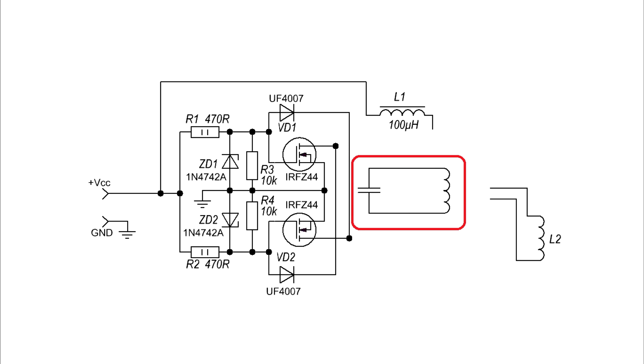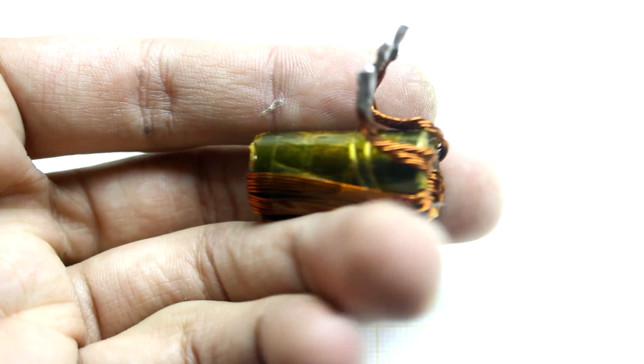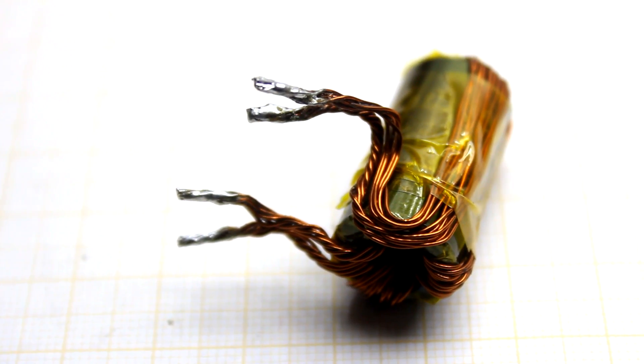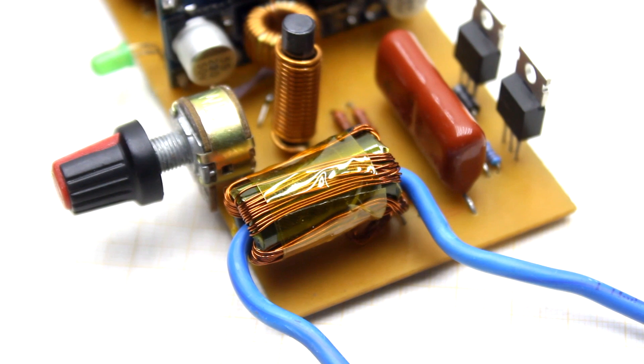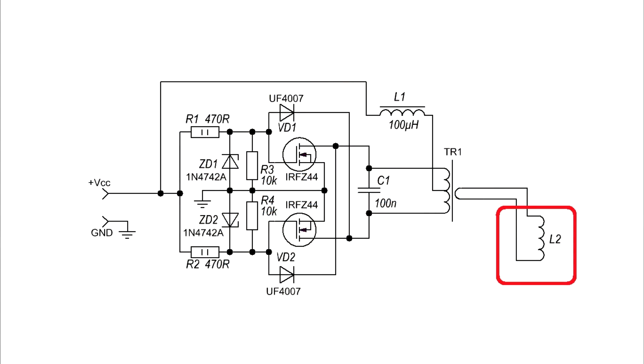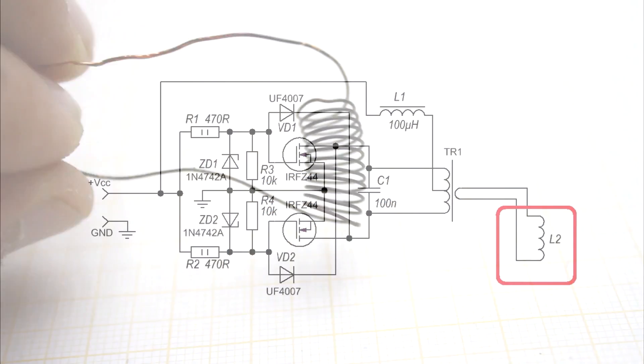The main operating frequency of the circuit depends on the resonant frequency of the oscillatory circuit. The second advantage of using a separating transformer is that the parameters of the inductor do not affect the operation of the circuit as a whole, since unlike the original circuit, the inductor is not involved in the LC circuit.